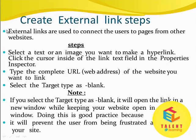Create external link steps. External links are used to connect the user to a page from other websites. First, select the text or image you want to make a hyperlink. Click the cursor inside the link text field in the property inspector. Type the complete URL of the website you want to link. Select the target type as blank. Note: if you select the target type as blank, it will open the link in a new window while keeping your website open in another window. Doing this is good practice because it will prevent the user from being frustrated and leaving your site.